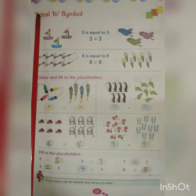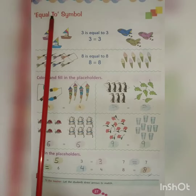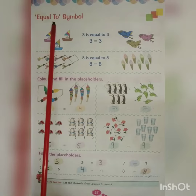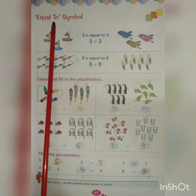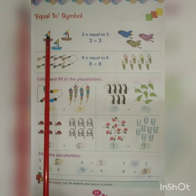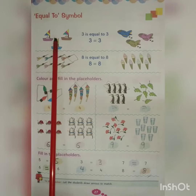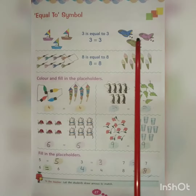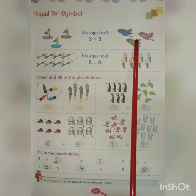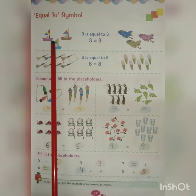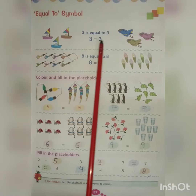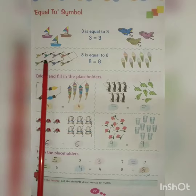Children, now we have the equal to symbol. Equal to means 'equal' or 'the same.' See here, we have one, two, three yachts, and here we have one, two, three aeroplanes. That means three is equal to three.